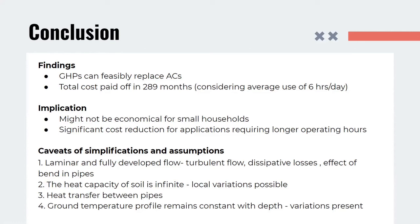Some of the caveats of the simplifications and assumptions used in problem solving are: laminar fully developed flow is considered. The flow is likely to be turbulent and hence there are dissipative losses that had been neglected by us. Also, the effect of the turns in the pipe is considered negligible, while they might be significant. The heat capacity of the soil is considered to be infinite. This might not be true since there can be local variations in temperature. As we had considered a single pipe, we had neglected heat transfer between the pipes, although this should be accounted for. We had considered that the ground temperature profile remains constant with depth, although there do exist slight variations in the temperature as we change depth.